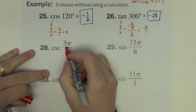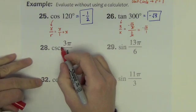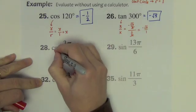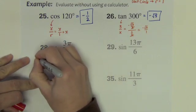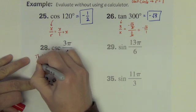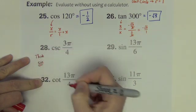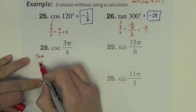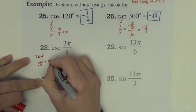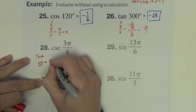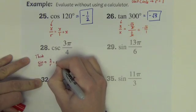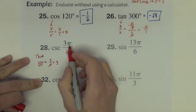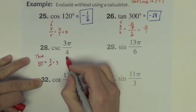Cosecant 3 pi over 4. There's two ways that we can think of this. I'm going to think, instead of cosecant, I'm going to think sine. The cosecant is the reciprocal of sine. So let's think sine. Sine, we said, was the y divided by r, which is just going to be the y. Again, because r is 1, so it goes away. So I need the y value of the point at 3 pi over 4.